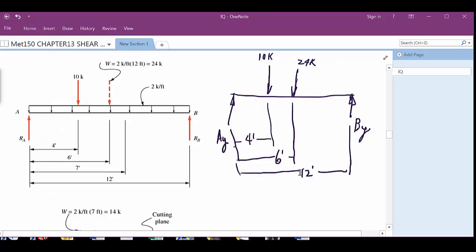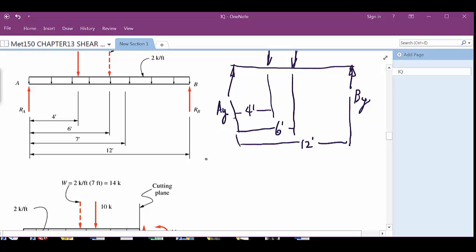So again, if we wanted to do the reactions at A and B, let's see, we've got, well, we could do forces into Y, right? Equals A_Y plus B_Y minus, what was it, 10 and 12? 22? Do you have 10 and 14? Oh, 10 and 24? Oh, it was 12 times 2, wasn't it? Yeah, so 34.